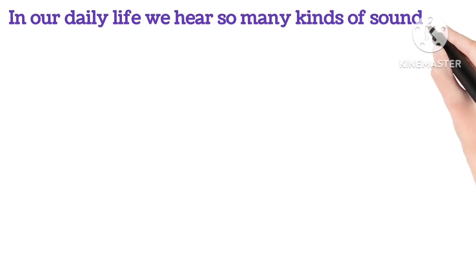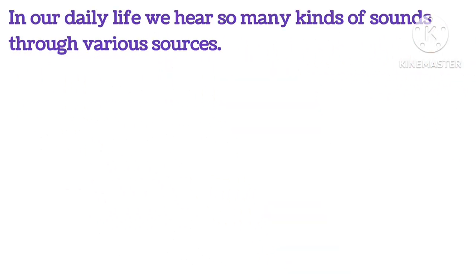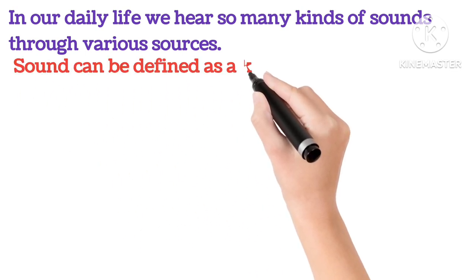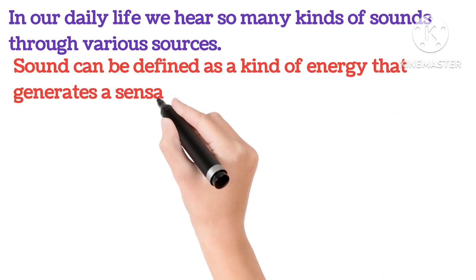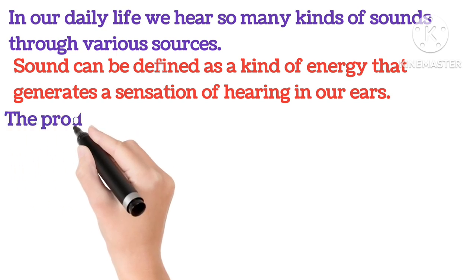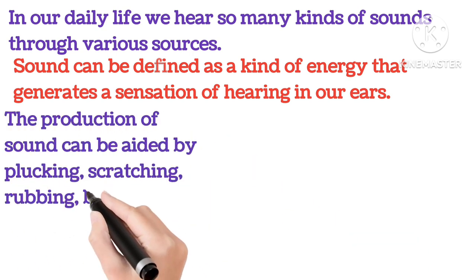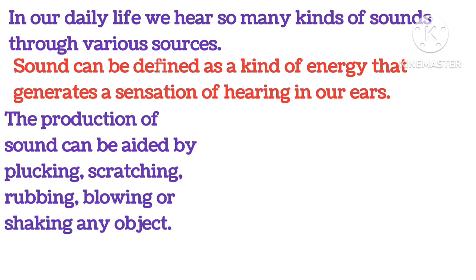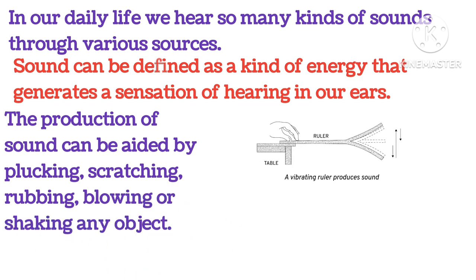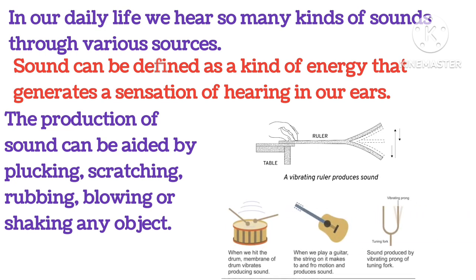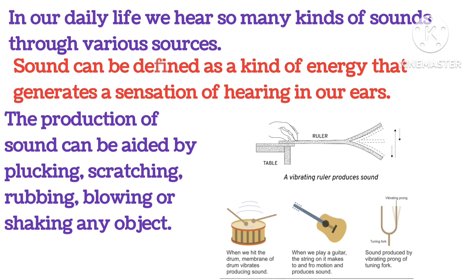In our daily life we hear so many kinds of sounds through various sources. Sound can be defined as a kind of energy that generates a sensation of hearing in our ears. Production of sound can be aided by plucking, scratching, rubbing, blowing or shaking any object. As you can see in the picture, when a ruler is shaken we hear some sound — same with the guitar, drum and tuning fork. We can hear different sounds through their vibration.